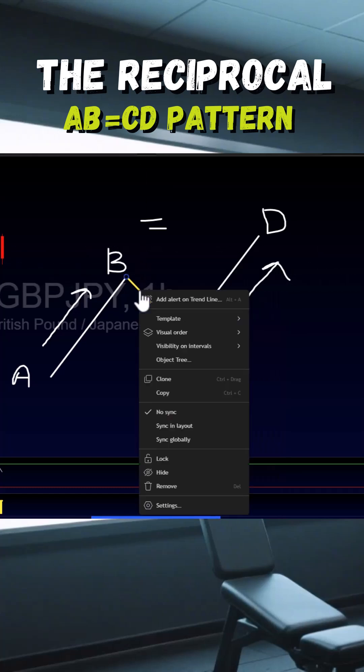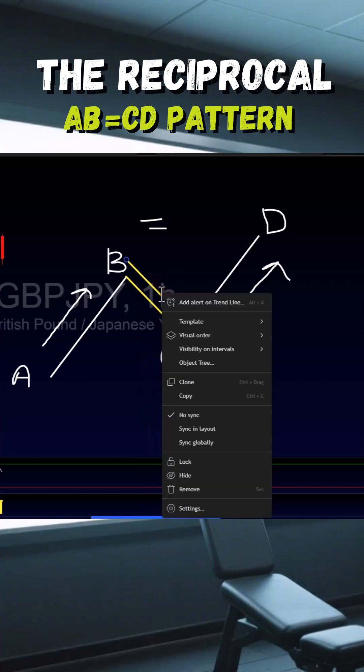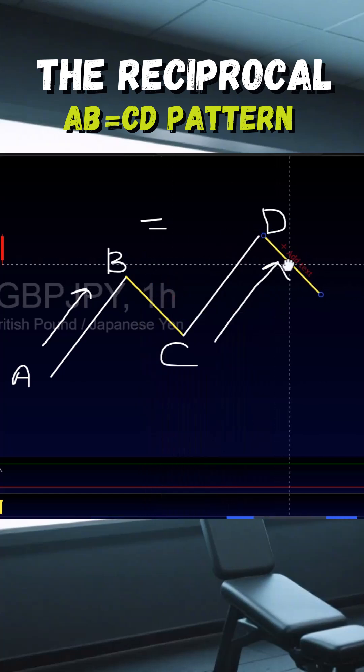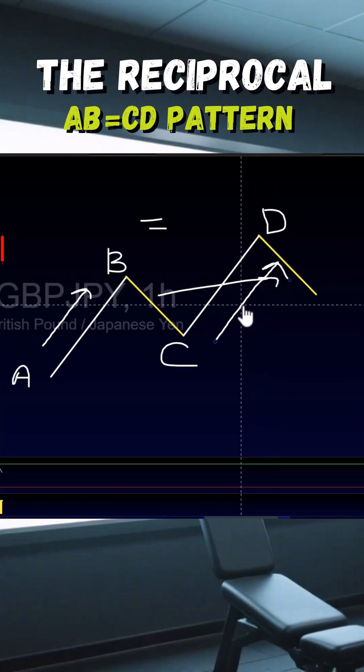You're looking for a pullback to be of equal length as the previous pullback. So connecting these should be of equal length.